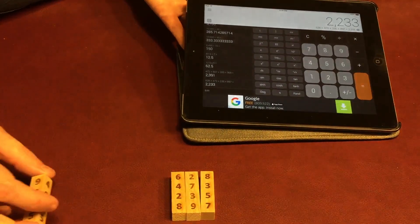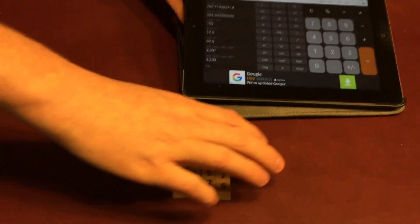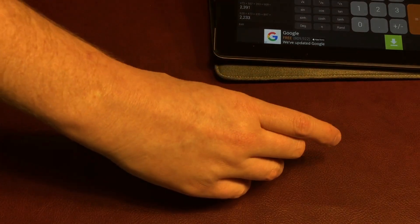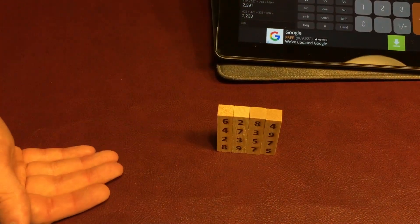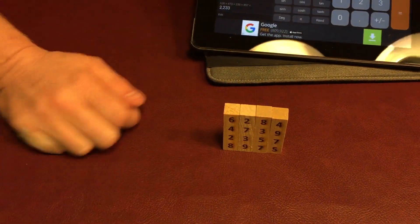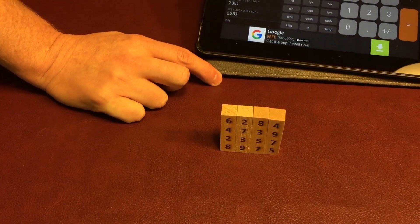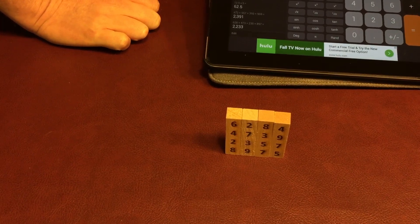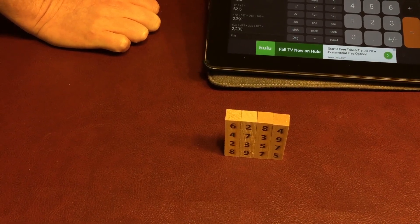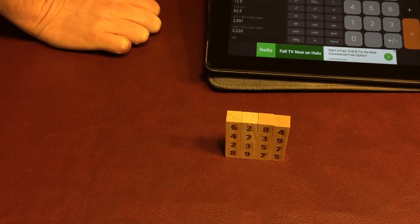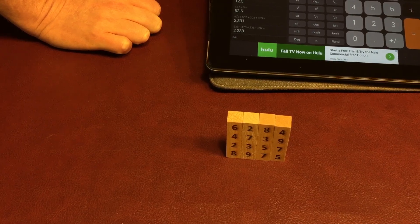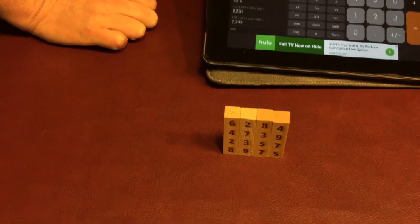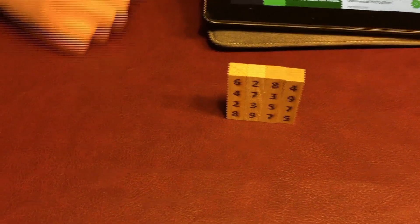And what's really cool too, if you want to do it as a mentalism routine, you can actually have them stand the sticks up so you can't even see what the numbers are. But if you'll pause the video and add them all up, you'll see that the number is, this time, it's 22,355. So, 22,355. That's the Magic Math Sticks, they're great.